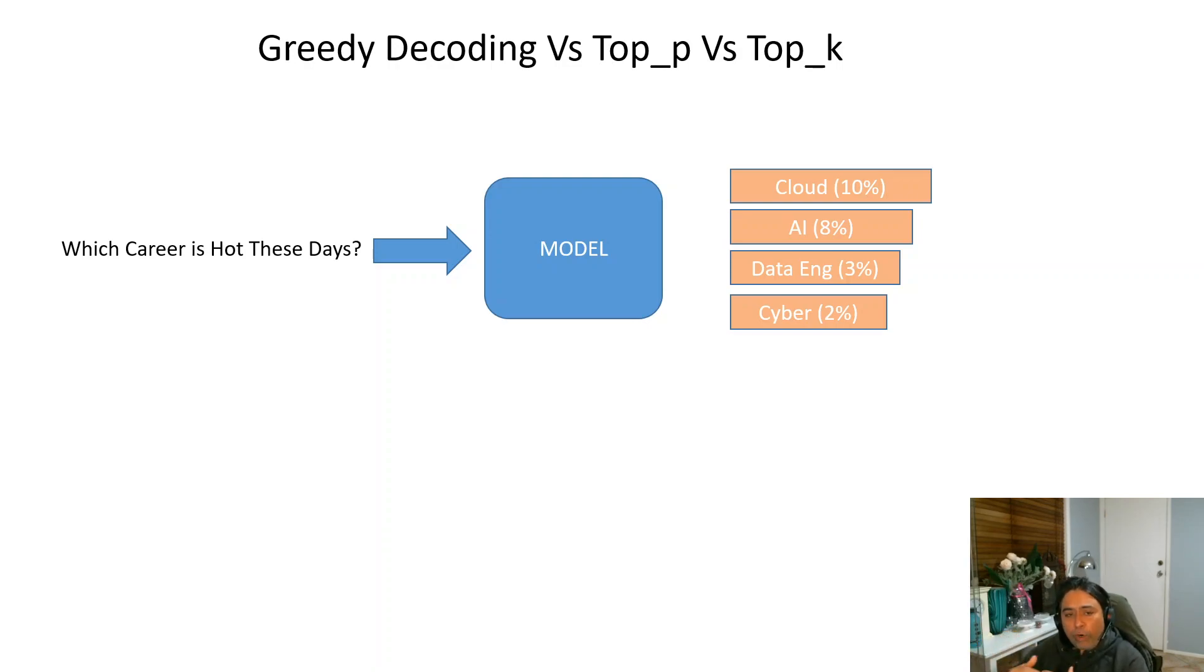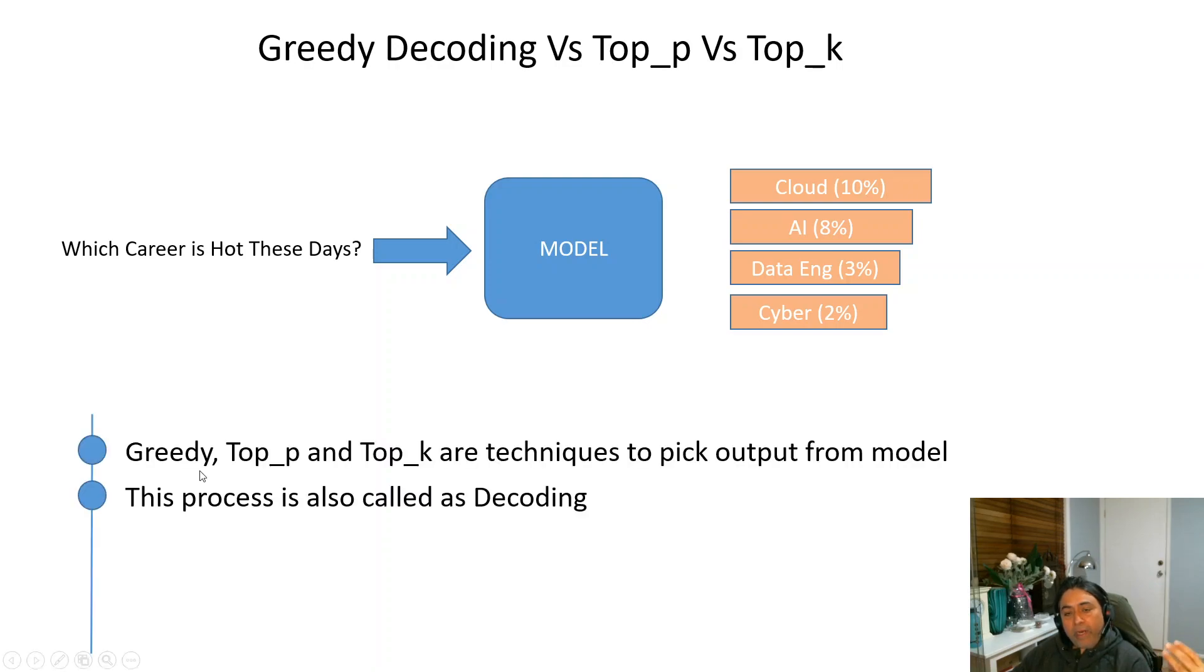Now, how does a model decide which of these tokens to return to the user? The process of deciding this output token is called decoding. There are three types of decoding: one is called greedy decoding, the second one is top_k, and the third one is top_p.